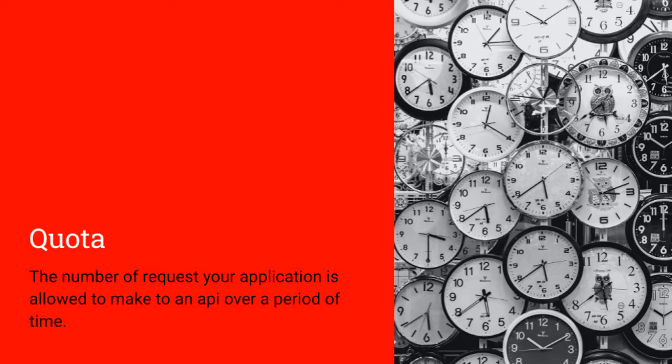So what are quotas? APIs are run on servers and servers have a limited number of requests that they can respond to. In order to ensure that everyone can use the API, companies like Google set limits as to how many requests an application like yours can make against the API. Normally, this is per day or per minute. So your quota is the number of requests your application is allowed to make to the API over a period of time.